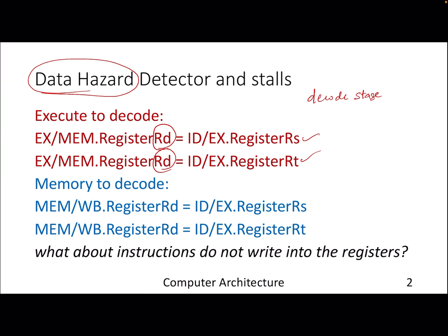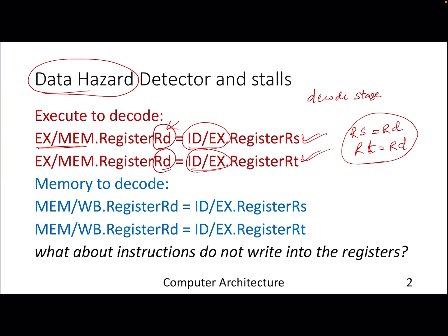In the pipeline we have inter-stage registers and inter-stage latches. From execute to memory stage, if the destination register stored in the latch is the same as the decode-execute latch that stores the source registers, we are comparing whether RS equals RD or RT equals RD. That can happen in the next stage also, in the memory write-back stage. Basically we compare register numbers across latches, and if any match, there is a possibility of hazard.